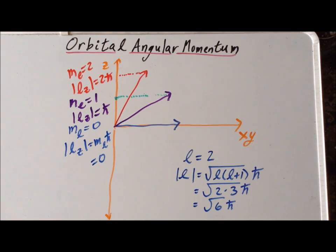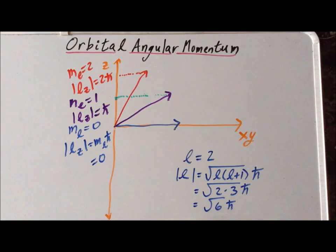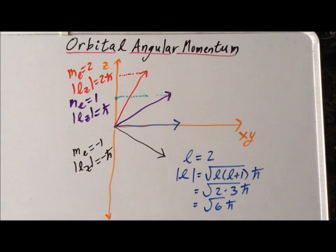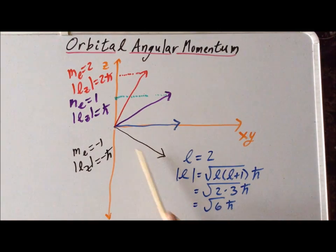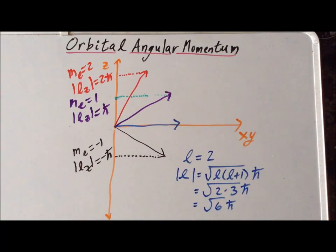Again, subject to my artistic capabilities — or lack thereof — the blue, purple, and red vectors all have exactly the same length of the square root of 6 times h-bar. There are two remaining possible orientations for this vector. One of those two involves pointing in the negative z-direction, and this corresponds to an m sub l value of minus 1.